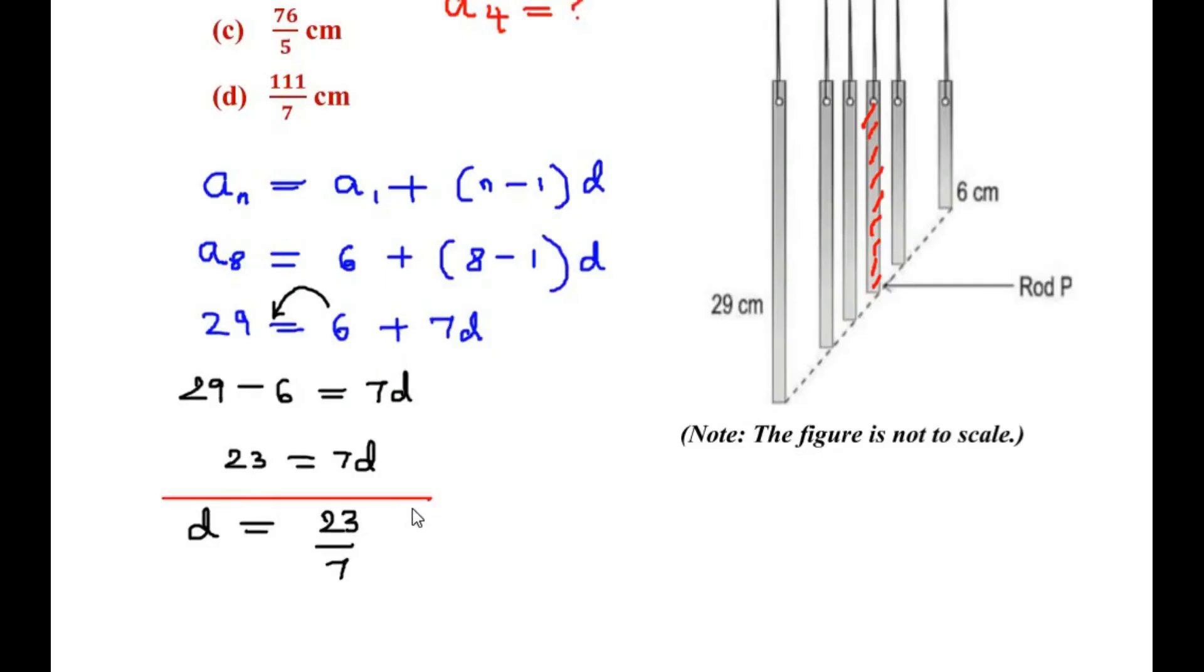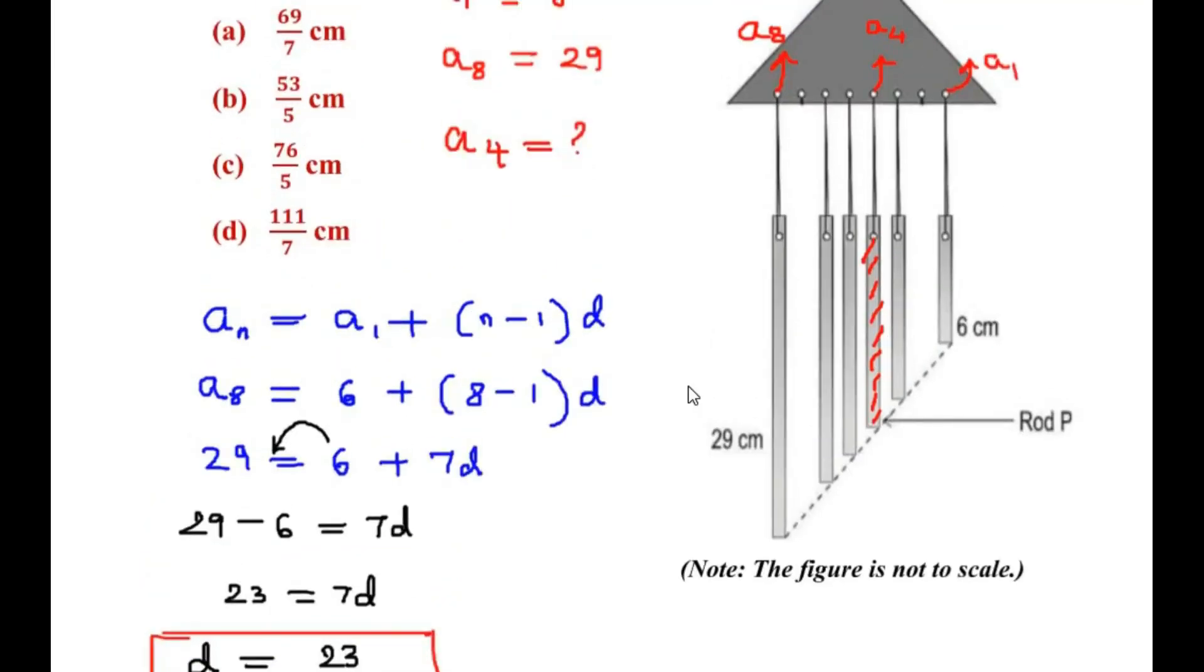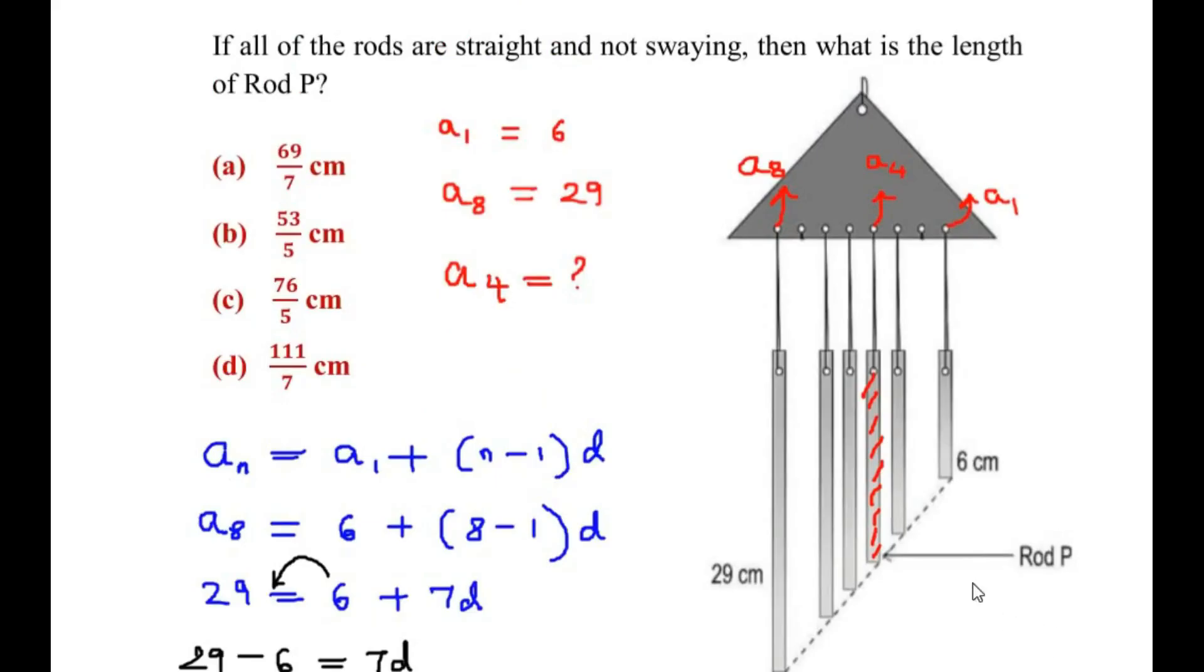Now this is important since we got the common difference. Now once we got the common difference, we can easily find out the length of the 4th rod, that is rod P.